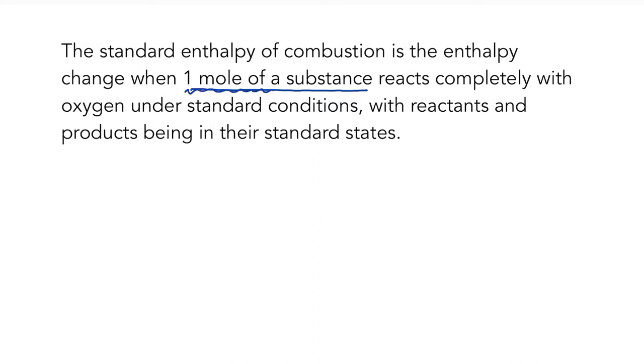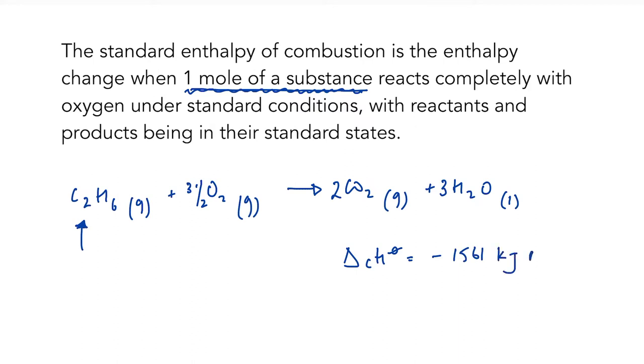Now, this one mole of substance is really important, because when we write an equation for a reaction, let's say we are looking at the combustion of ethane. So C2H6 gas reacting with oxygen, complete combustion to make carbon dioxide and water. I have two carbons, so I'm going to make two carbon dioxide. Six hydrogens makes three waters, which means that I will need three and a half O2. Now, it's really important that I don't double up, because my definition is for one mole of my substance being combusted. So my ethane needs to be one mole, and everything needs to be balanced from that.